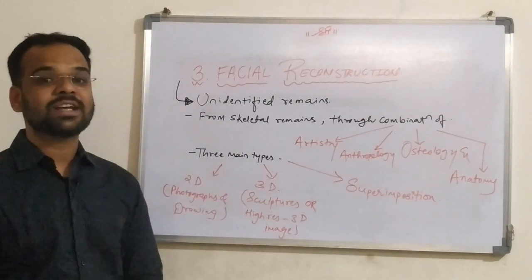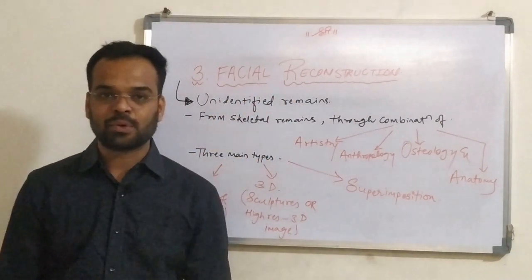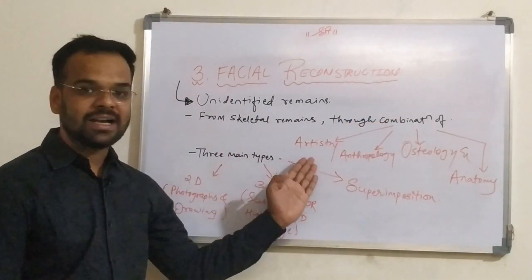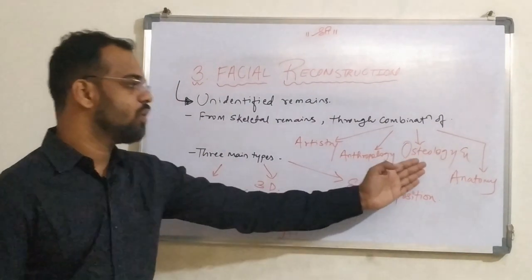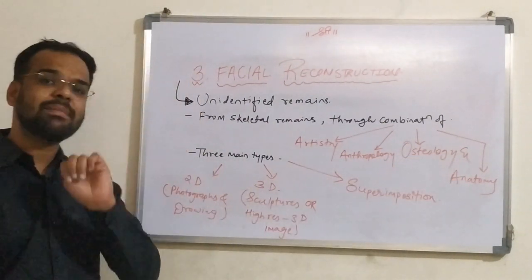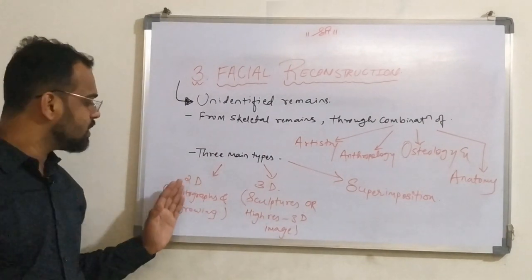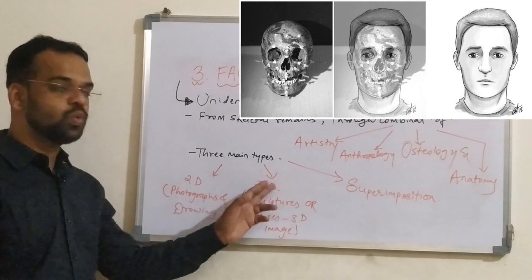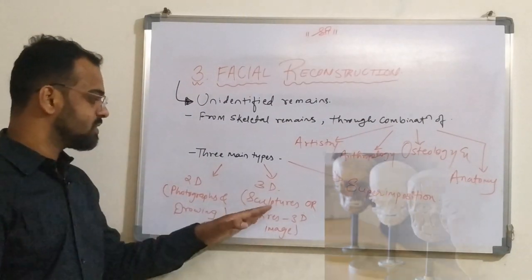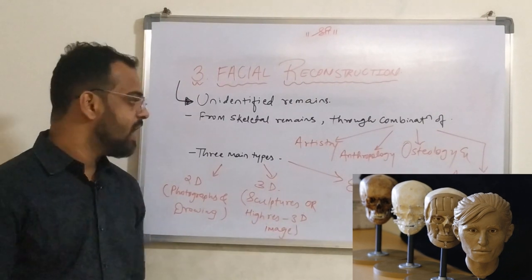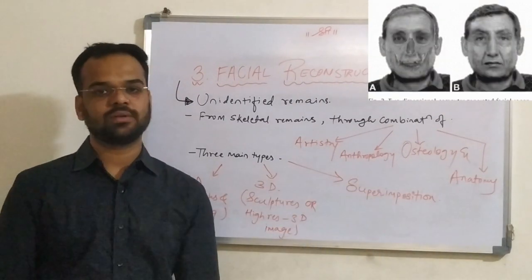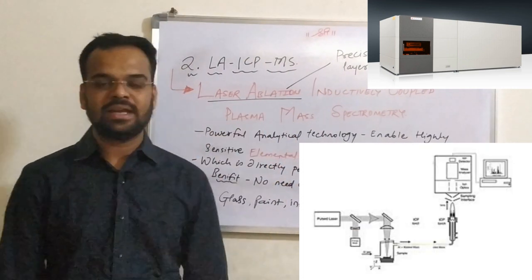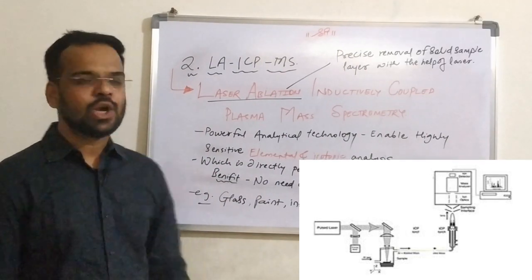Number three: facial reconstruction. Facial reconstruction is a method used when a crime involves unidentified remains. The process recreates the face of an individual from skeletal remains through the combination of artistry, anthropology, osteology, and anatomy. There are three main types: first, 2D, which involves photographs and drawings; second, 3D, which involves sculptures or high-resolution 3D images; and third, superimposition.